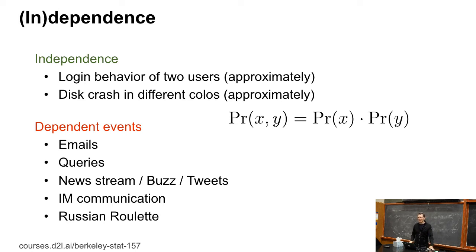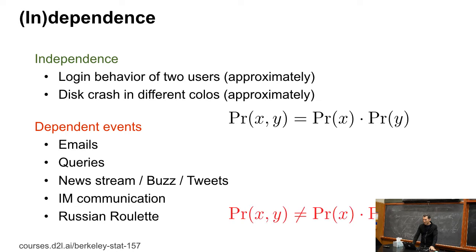There's a nice other problem called the Monty Hall problem — at some point Google that. It's very nicely explained in terms of conditional probabilities, and you can wonderfully stump anybody who doesn't know statistics. In any case, what this means is that P(X, Y) is not P(X) × P(Y), and that's pretty much everywhere — and that's actually awesome because it makes our life easy.